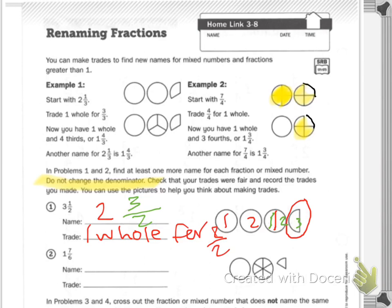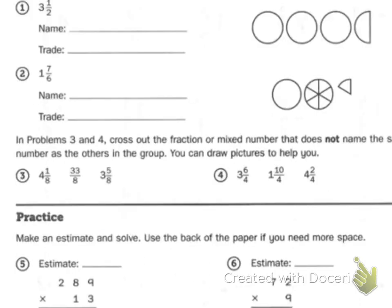Try number one or number two on your own. My hint for you is maybe turn the one that's broken up into a whole piece. In problems three and four, cross out the fraction or mixed number that does not name the same number as the others in the group. You can draw pictures to help — you might want to have a separate sheet of paper.